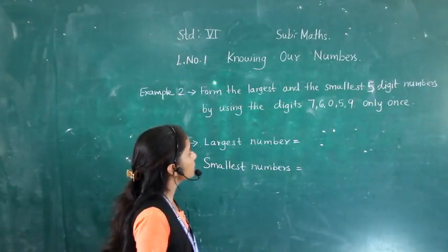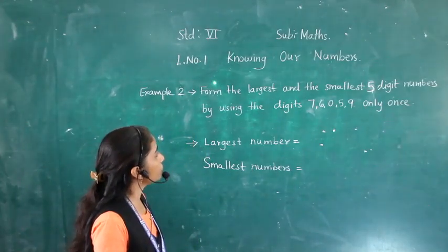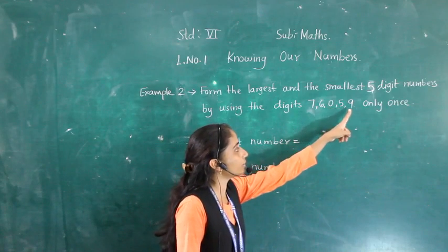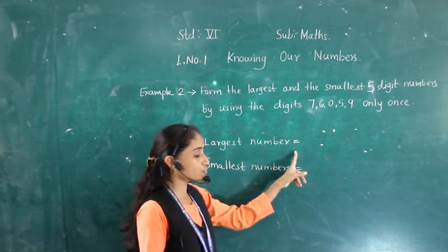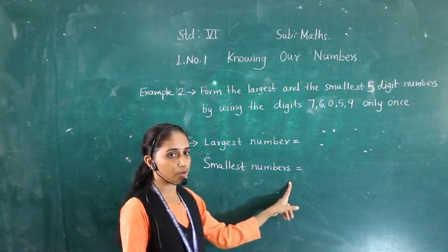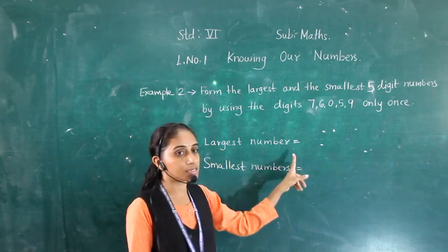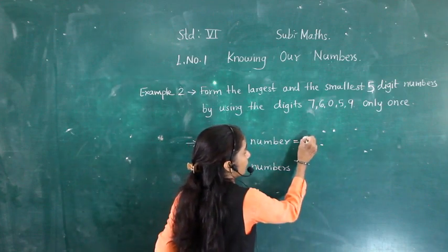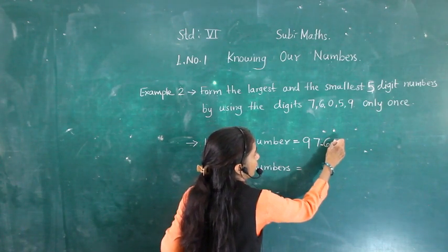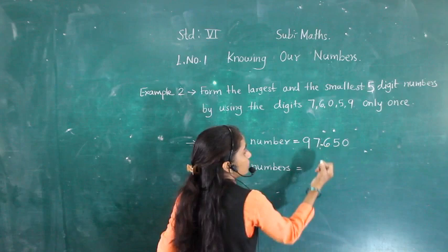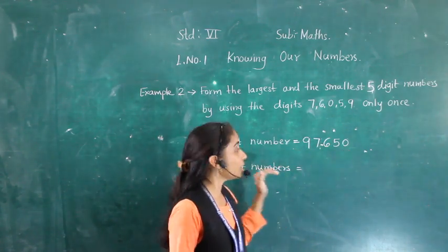Let's move to the next example. Form the largest and smallest 5-digit numbers using the digits 9, 7, 6, 0, 5 — each only once. While making the largest 5-digit number, we arrange the digits in descending order: 9, 7, 6, 5, 0. So 97650 is the largest number.